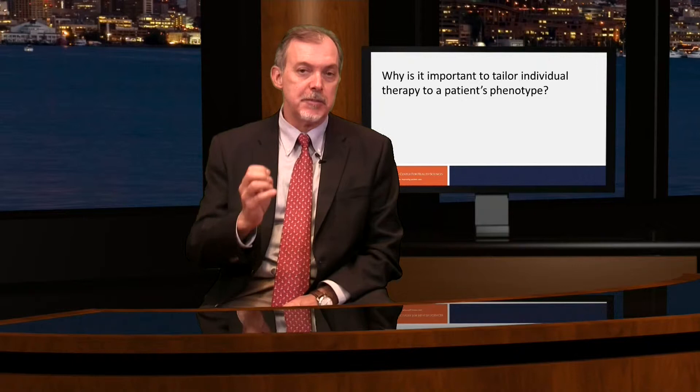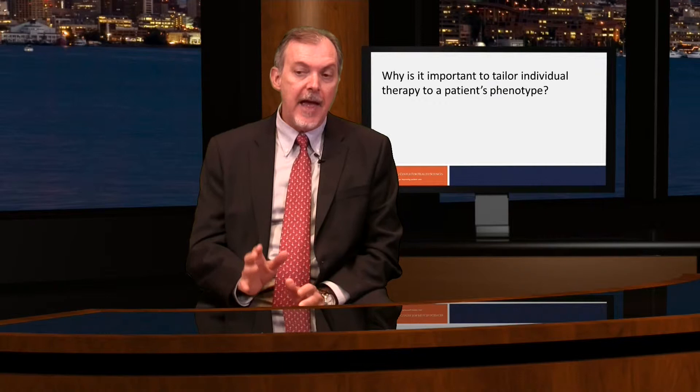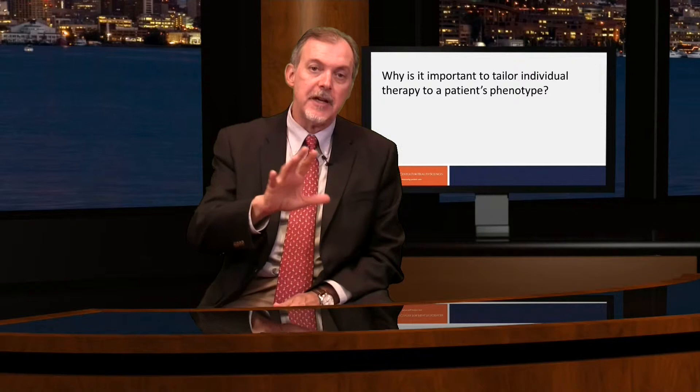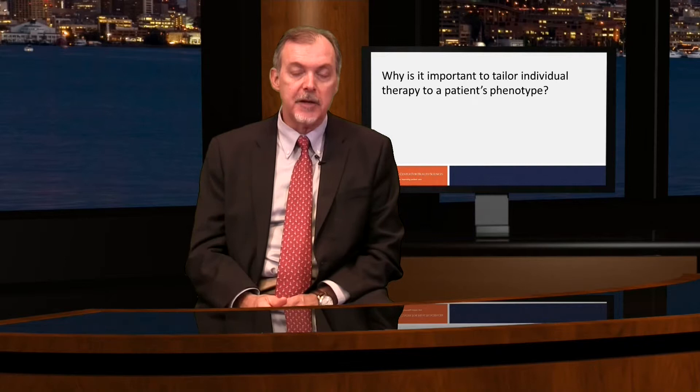Conversely, if a patient had a blood eosinophil count of 500 and an exhaled nitric oxide level of 32, and the patient was compliant with their inhaled corticosteroids, then what I could surmise is that the patient probably had some form of resistance to that therapy for a number of possible reasons. In that situation, if their disease were severe enough, we would consider the use of a biologic — and in all likelihood, because of the high eosinophil count, probably an anti-IL-5 drug.